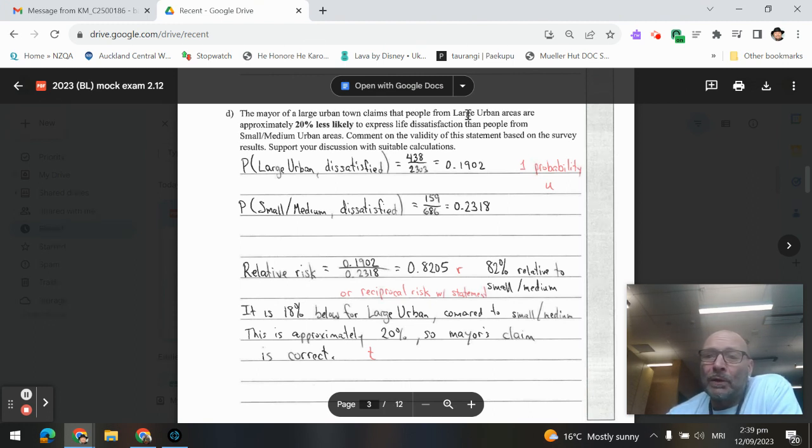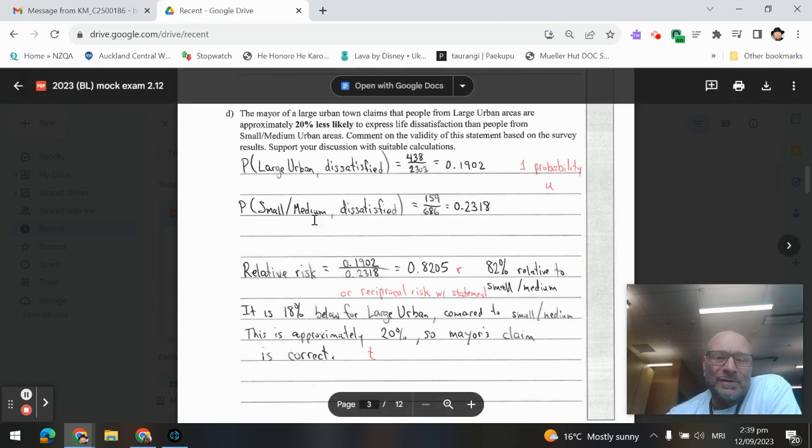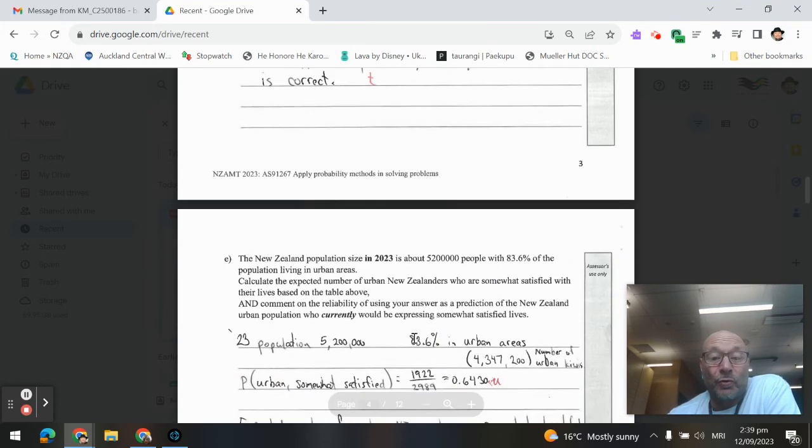So, since the first area was the large urban, that's going to be the numerator of the fraction and the denominator, the bottom one, or the second one, the denominator, or the bottom. So, simplifying that fraction, we get 0.8205, which is about 82% relative to the smaller medium ones, and that is about 18%. So if it's 82% is the relative risk, and getting at to 100%, that leaves 18% below, and since the question had said approximately 20%, I would say 18% is approximately 20%. Mayor's claim is correct.